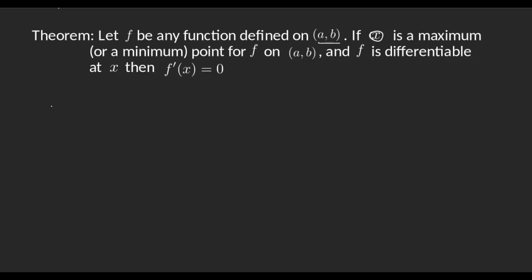Graphically it makes sense, and this is something we saw in the previous video. If I have my function and this is a maximum value, then the derivative — the slope of the tangent line — at this point is 0, and then it decreases again. The same would happen for a minimum: the slopes decrease, then it's 0, and then they start increasing. These positive slopes on one side and negative on the other is what the proof of the theorem is based upon.